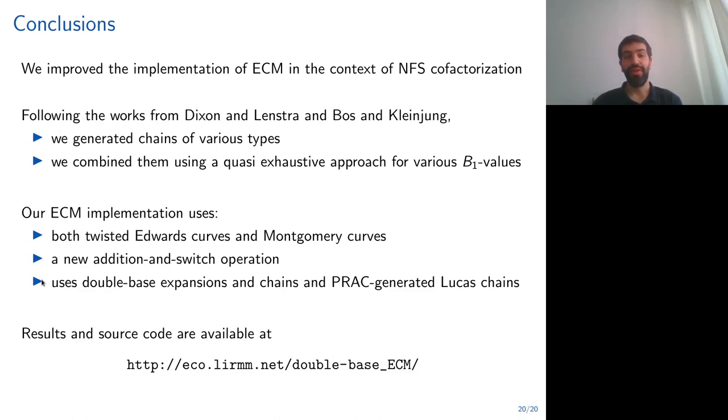To conclude, in this talk, we proposed a new and better implementation of ECM in the context of NFS cofactorization. Following the idea from Dixon and Lenstra and Bos and Kleinjung, we generated blocks of various types, like double-base chains, double-base expansions and Lucas chains, and we combined them using a new quasi-exhaustive approach for various B1 values. Our ECM implementation used both Twisted Edwards curves and Montgomery curves, used a new addition and switch operation to go from two points in Twisted Edwards curves to their addition on the Montgomery model, and used not only NAF, but also double-base expansions and chains, and also PRAC generated Lucas chains. All our results and our source code are available at the following address. Thank you for your attention.